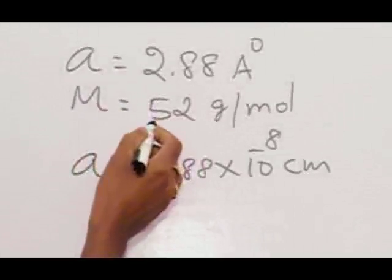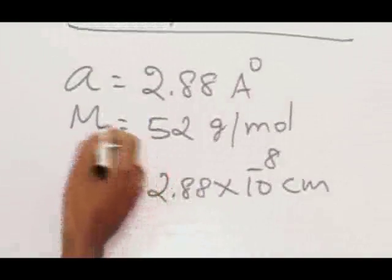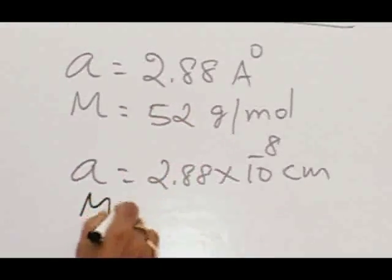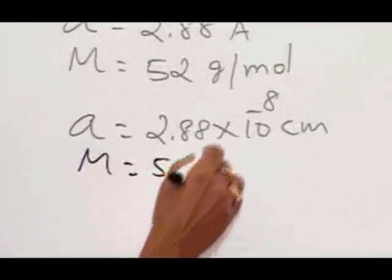Now the molar mass - since it is an element, we can call this atomic mass also. So M equals 52 grams per mole.